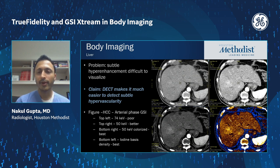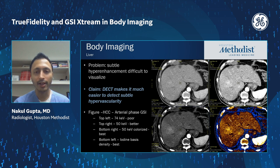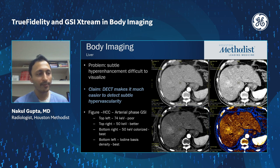Here's a similar case with the same image layout. The abnormality is more rounded or mass-like in the right lobe of the liver — very subtle and hard to delineate on the 120 kVp-like image. Once you go down to 50 keV and look at the iodine maps, it's a more conspicuous lesion, much easier to detect and delineate.